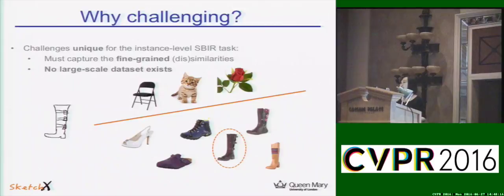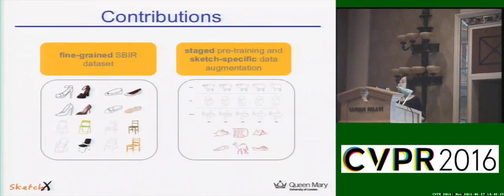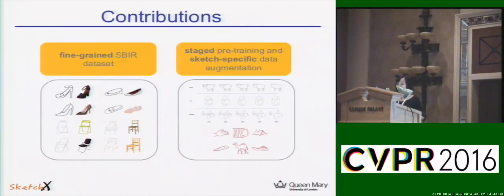For our study, there is another big challenge: there is no existing dataset to use, so we first need to collect one. In our work there are two main contributions. First, we contribute two new fine-grained SBIR datasets with extensive human ground truth annotation. Second, we propose two methods to solve the data sparsity problem: a staged pre-training strategy, and sketch-specific data augmentation methods.